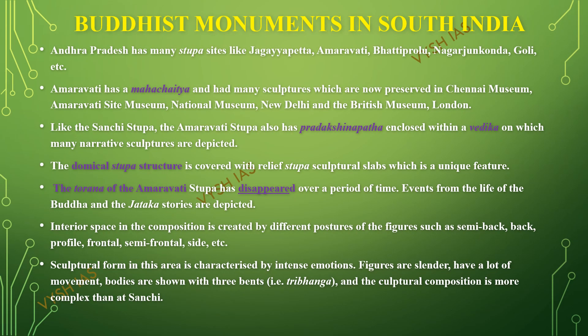Now let's see the Buddhist monuments in South India. We have seen about the Barhut Stupa and Sanchi Stupa in the previous video. Now in South India, in Andhra Pradesh, the stupa sites are found in Jagayapeta, Amaravati, Batiprolu, Nagarjunakonda, and Koli. These are some of the important places where stupas can be found in South India.